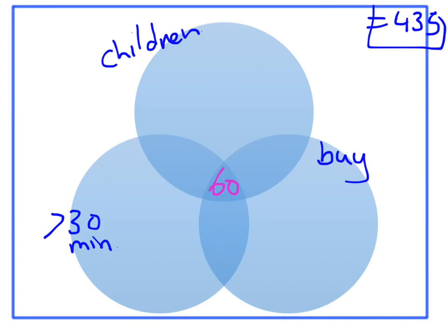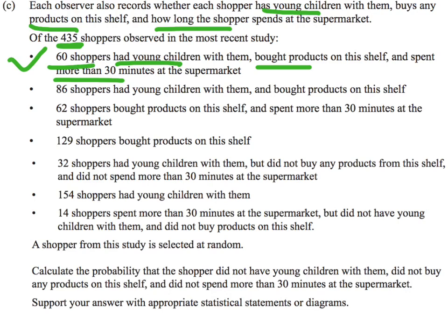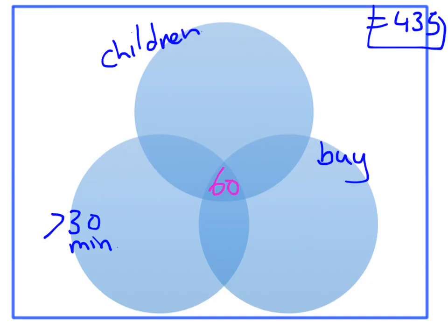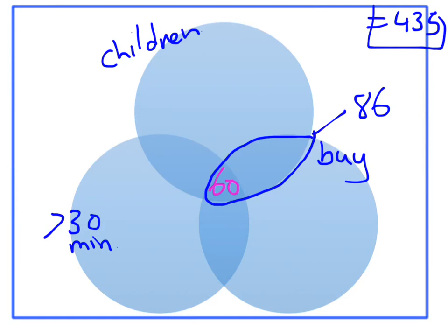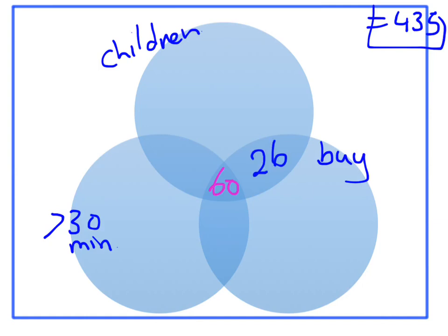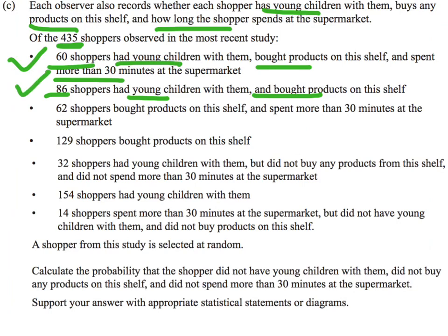Starting from the center outwards: 60 people are in the intersection of all three circles. Next, 86 shoppers had young children and bought products. That whole overlapping section of children and buying products has to add to 86. Since 60 is already in the middle, 86 minus 60 gives us 26 for the remaining part of that two-circle intersection.